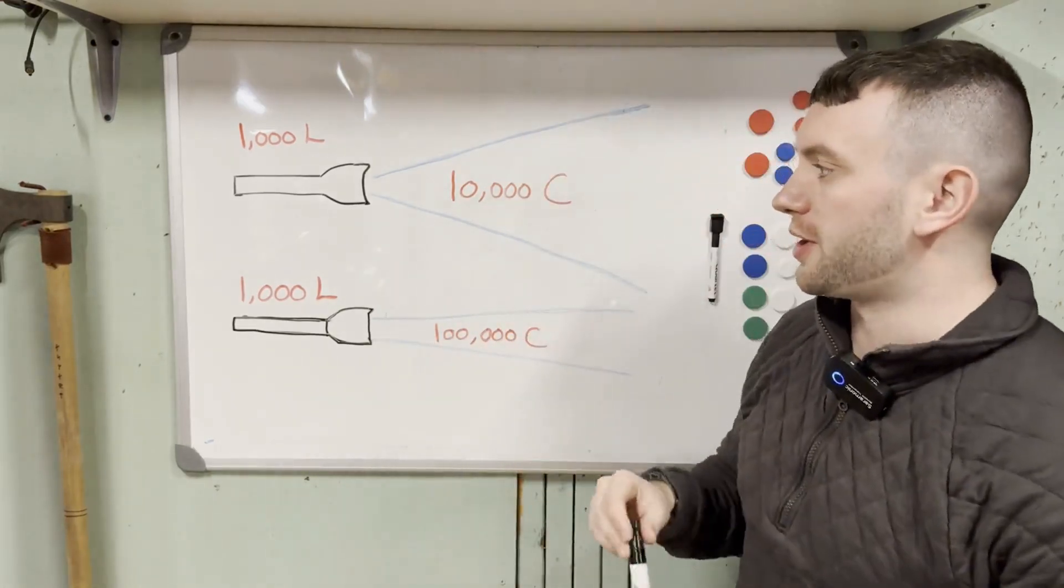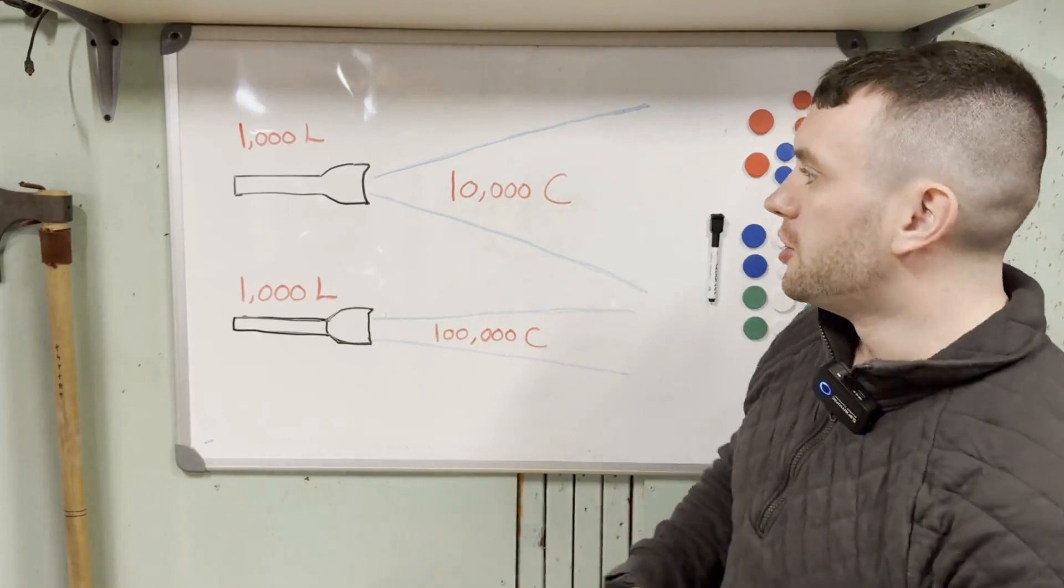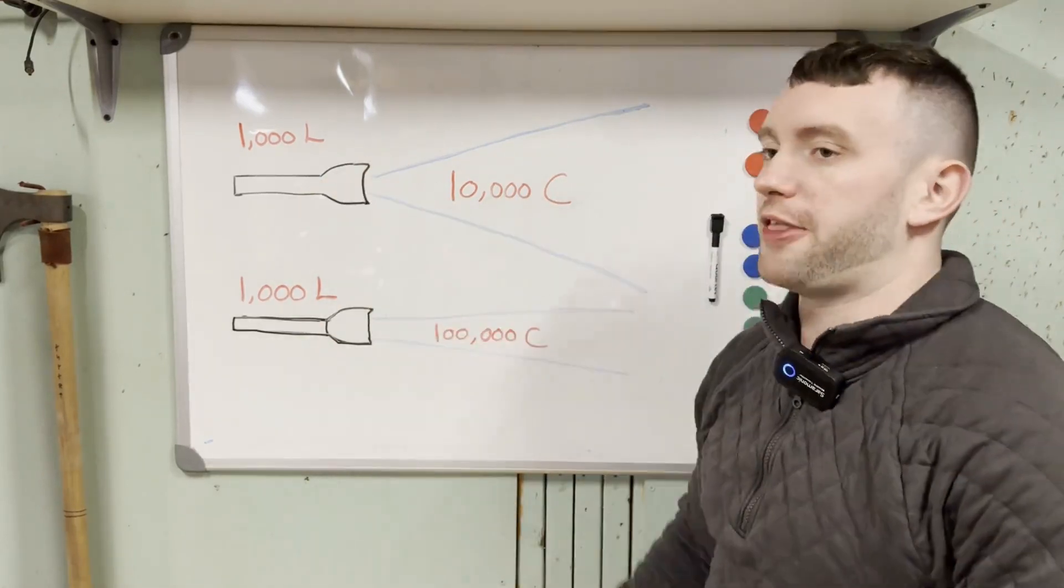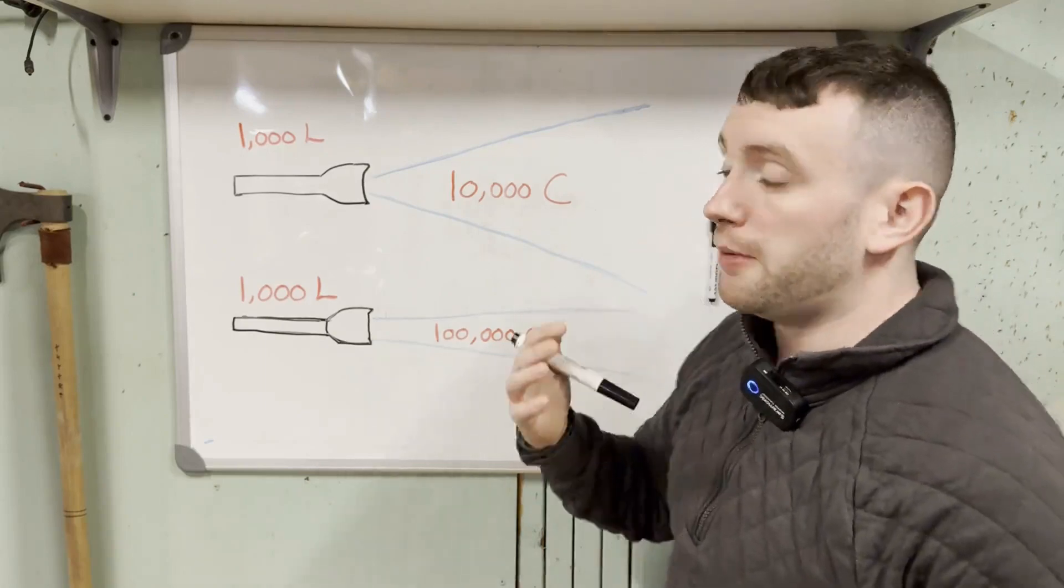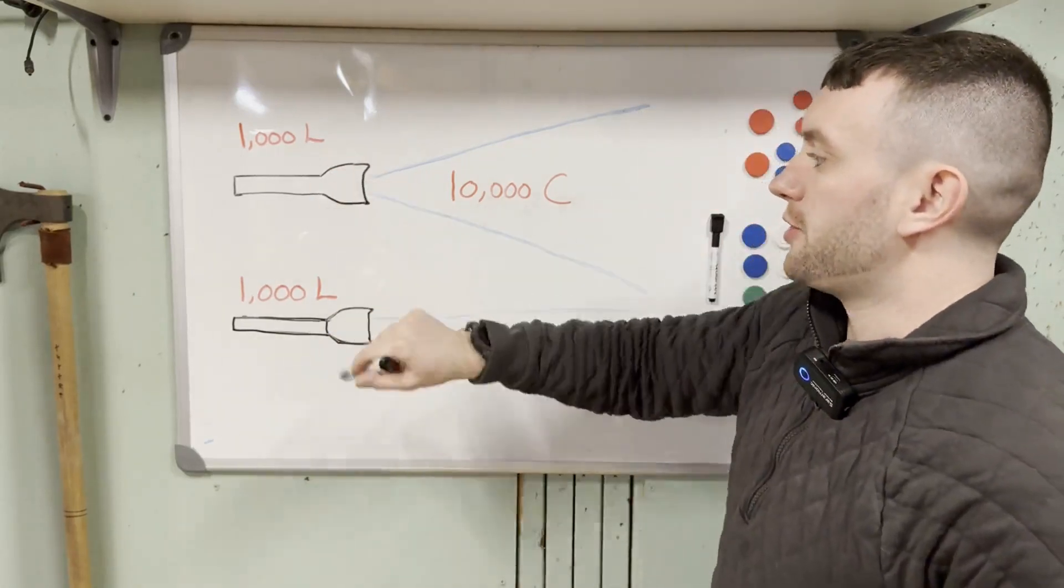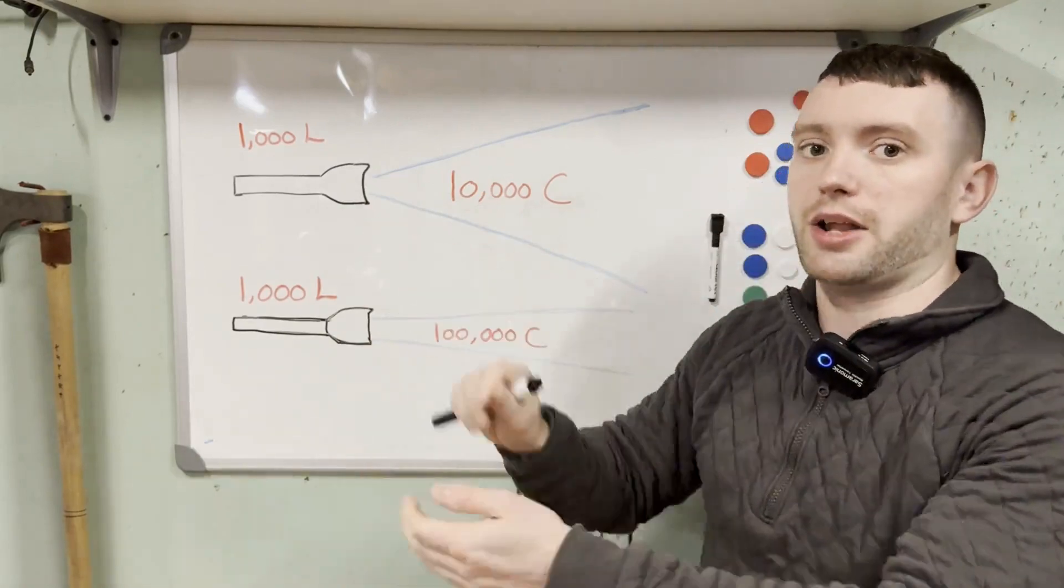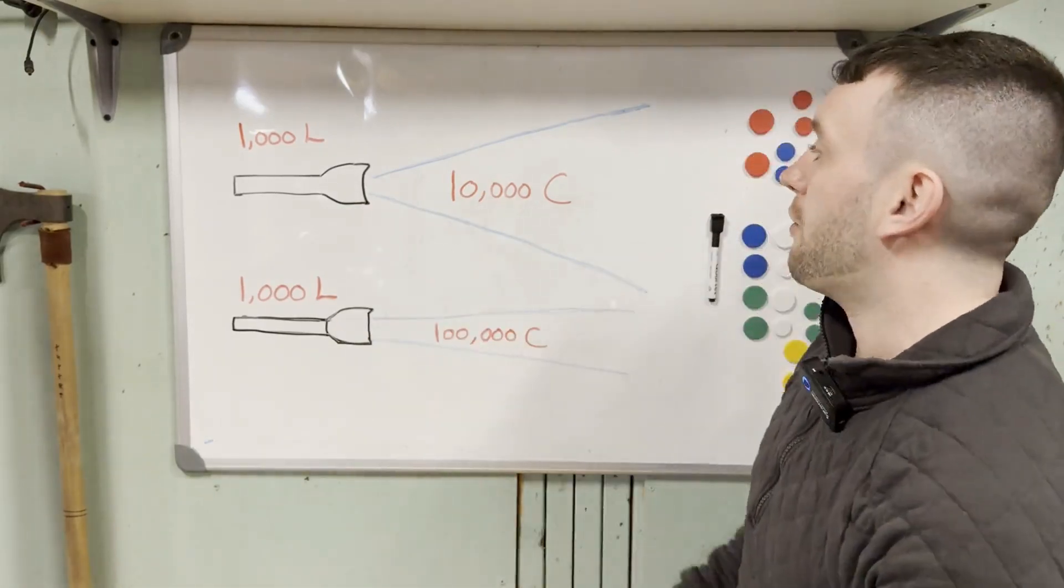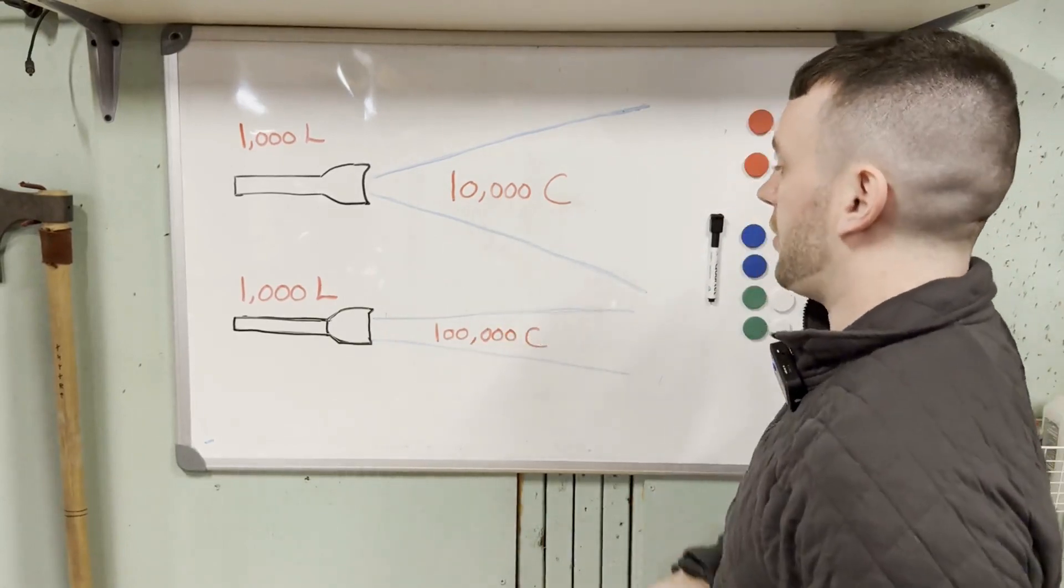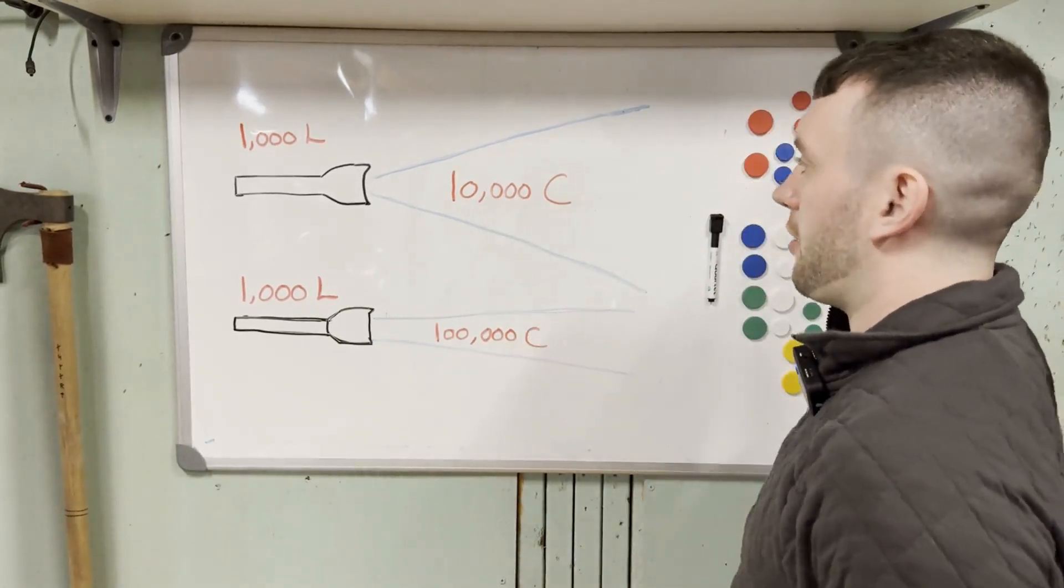Let's use a quick example to demonstrate this. We have two lights, both producing the same amount of light - a thousand lumens. Lumens is simply a measurement of light output, so these flashlights are pushing the same amount of light. However, one light produces ten thousand candela while the other produces a hundred thousand candela.